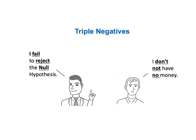Statistics is confusing even for intelligent, technical people. And for many people, the most confusing concept in statistics is "fail to reject the null hypothesis." That's not surprising because that statement is a triple negative — it's like saying, "I don't not have no money." And people just don't talk like that or think like that.